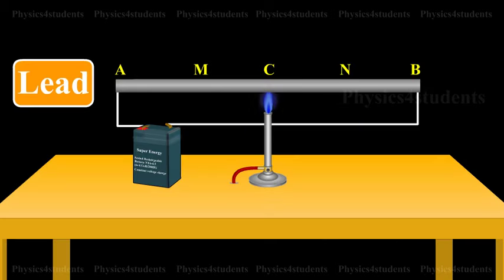If we take a bar of lead and heat it at the middle point C, the point M and N equidistant from C show the same temperature when current is flowing from A to B or from B to A.